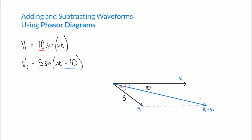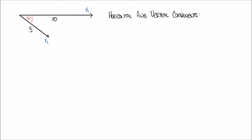Since we haven't drawn a perfect diagram, we're going to use trigonometry to calculate the length of V1 plus V2 and its angle from the horizontal. We'll break our vectors into horizontal and vertical components — no diagonals allowed. For V1, it has a horizontal component of 10 and a vertical component of 0, since it's only moving in a horizontal direction.